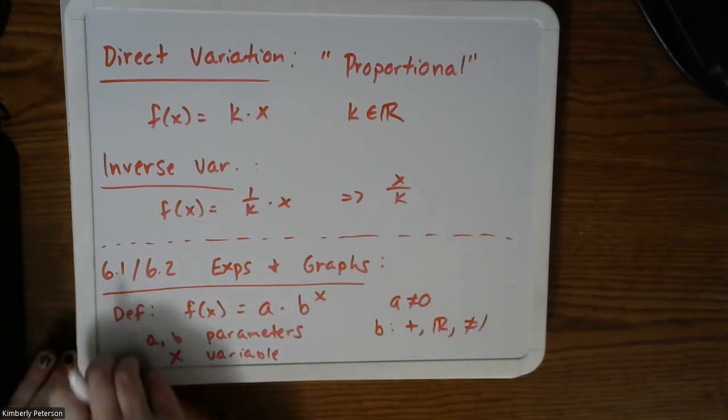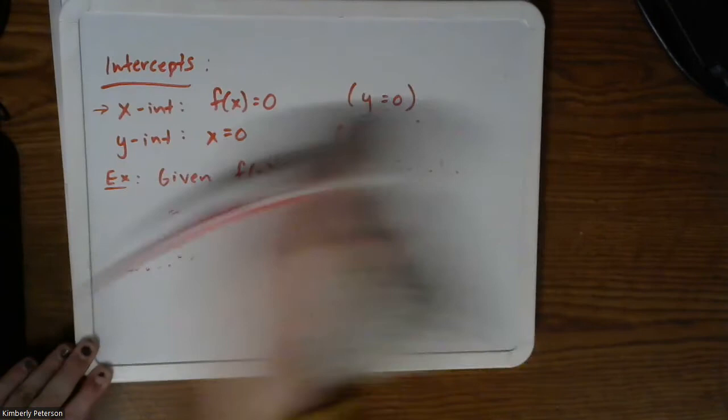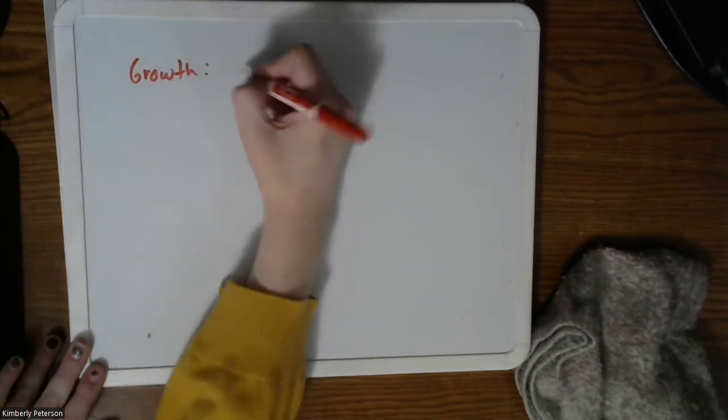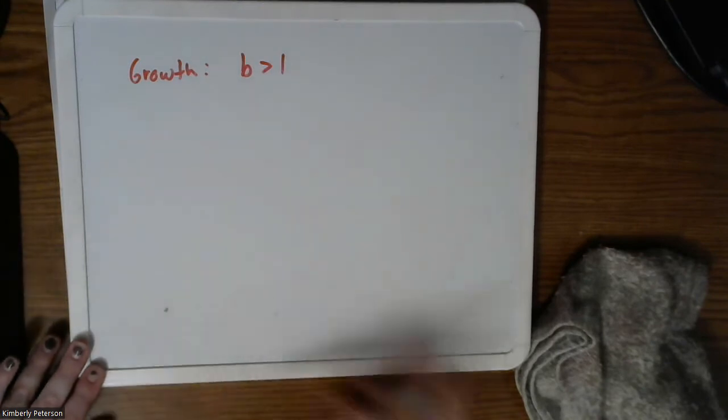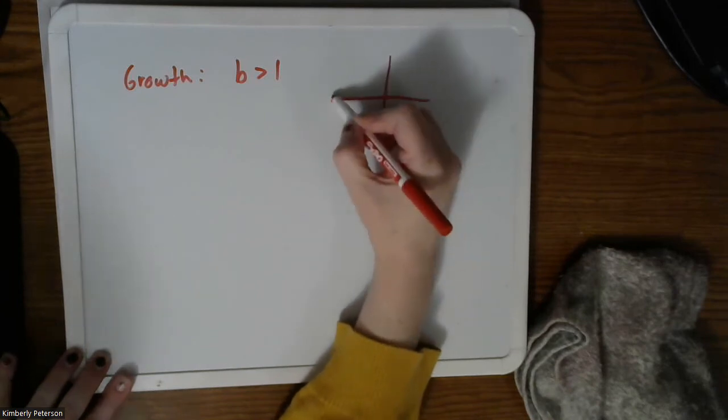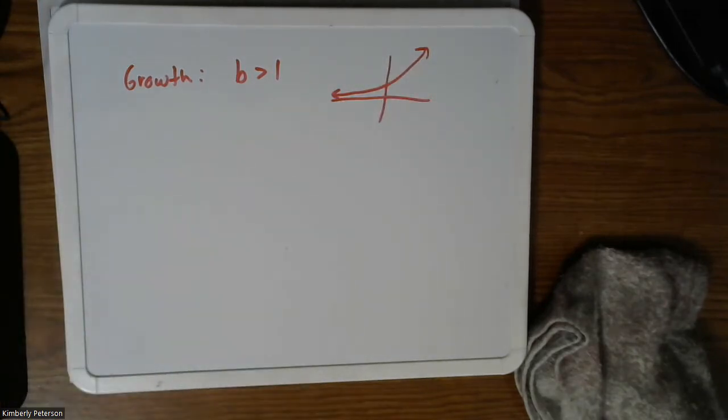So then we had kind of two different types of exponential functions. You either grow or you decay. So we have growth, which occurs when your base is greater than one. So that would look something like maybe two to the x or e to the x. So imagine, hypothetically, that you're living in a very prosperous river system. The fish are doing really well, and they are thriving, and they are growing in population by reproduction.